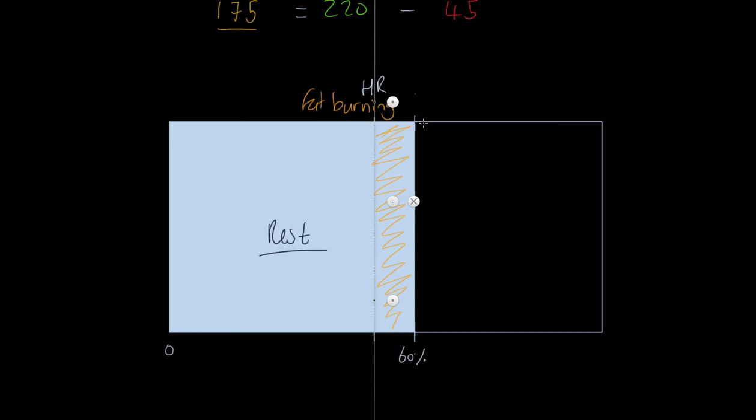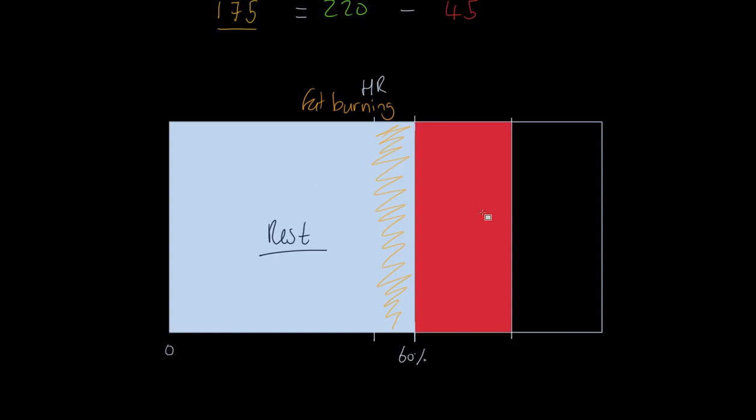Now where we want to go next is we want to bring our ruler back into play and we want to say that from 60 to 80%, so I'm going to estimate that 80% is about there. From 60 to 80% is a different zone, so this zone here, I'm going to fill it in with kind of like a ready color. This zone there is what we would call the aerobic zone, the aerobic, so I'll just write that in there, this is the aerobic zone.